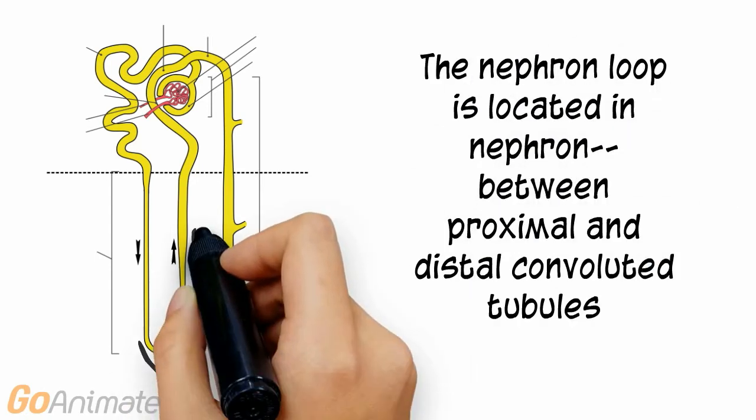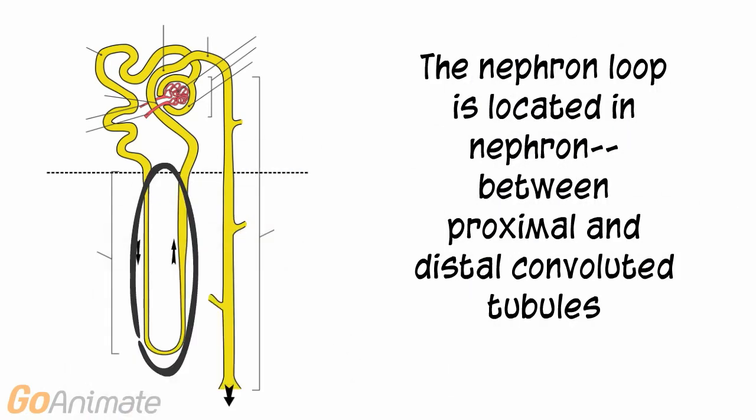The Nephron Loop is located between the proximal and distal convoluted tubules of the Nephron.